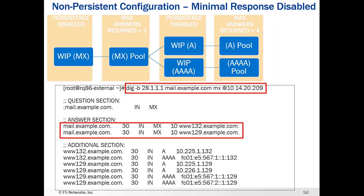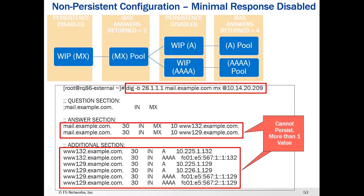Those are the two wide IPs contained within those A and Quad-A pools. For each of those, we're going to get back some A and Quad-A answers that fill up the additional section. The problem is we can't persist on more than one value — which of these values do we actually want to put into the persistence table to make sure that the LDNS gets the same response every time? We just can't do it. There's too much information here, and persistence is disabled. With max answers returned set to 2 and 4, we can't persist because there's more than one value.